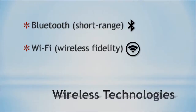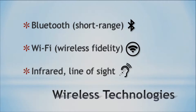So we have Wi-Fi, which stands for Wireless Fidelity, and that is something that many of our children cannot live without. They are so used to having Wi-Fi that if it's not there, they will panic. Then we have line of sight, and that's for infrared.